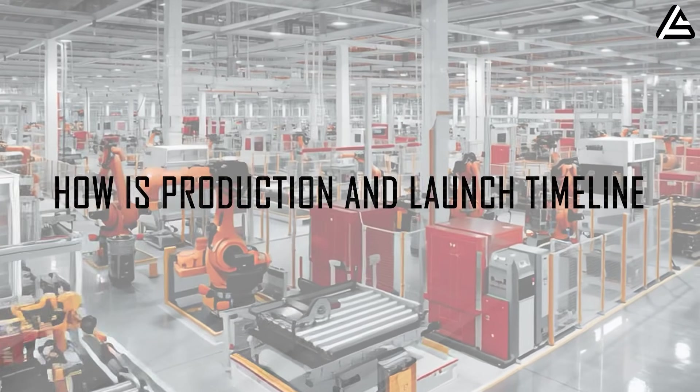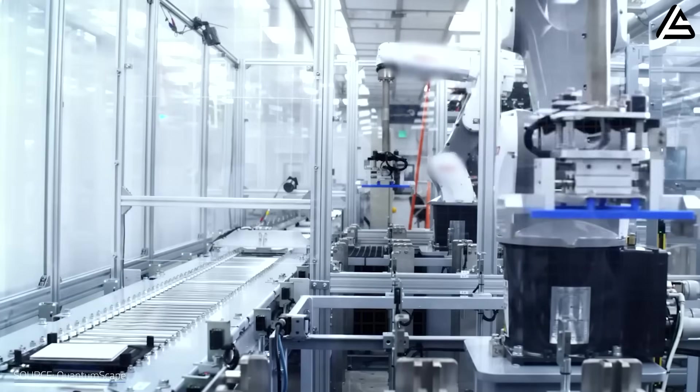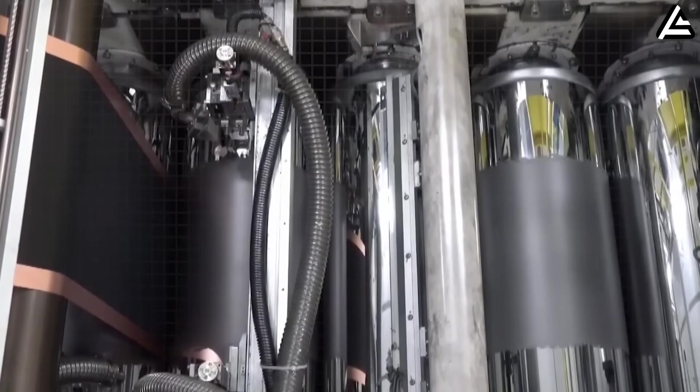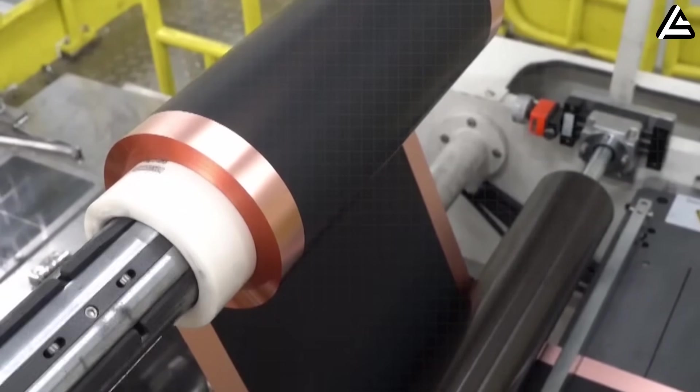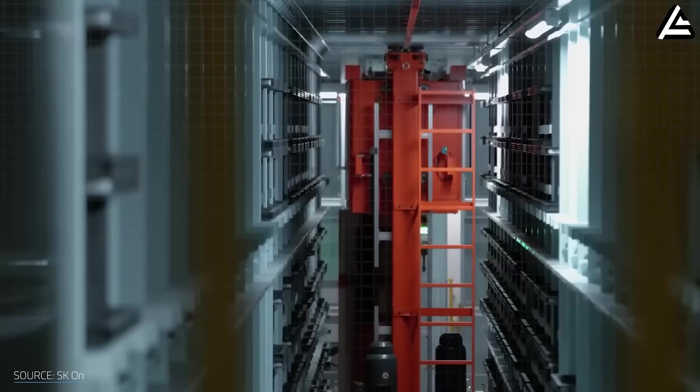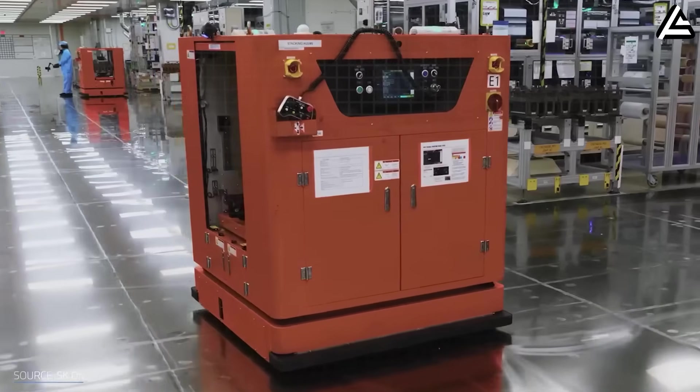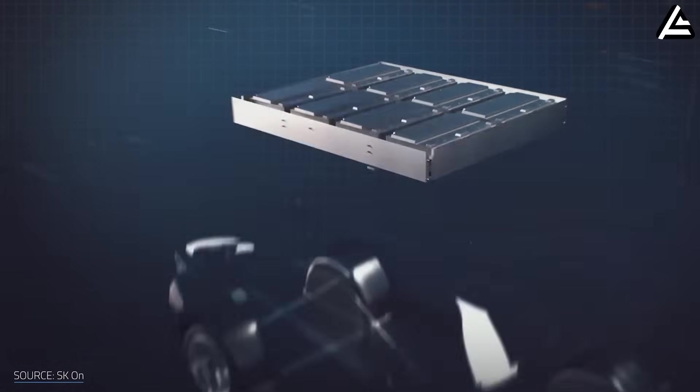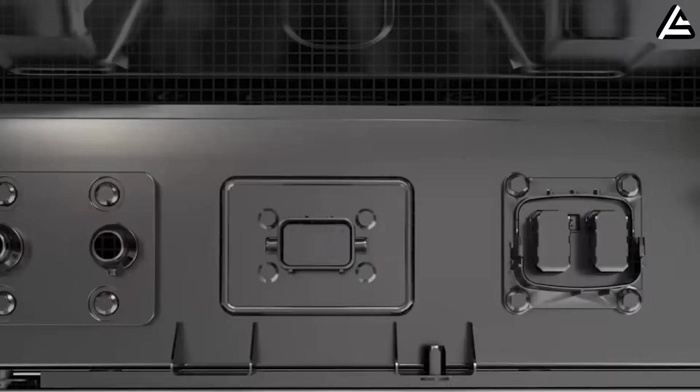How is production and launch timeline for solid-state cells? Tesla's solid-state battery program is moving from the lab toward industrial-scale deployment in a highly methodical way, prioritizing both reliability and manufacturability. According to internal sources, the company plans to begin small-batch pilot production in 2026, leveraging modified 4680 lines at its existing gigafactories. These pilot runs will produce limited quantities of 60 to 75 amp-hour cells to validate assembly, integration into modules, and real-world thermal performance. Each batch will undergo rigorous vehicle-level testing in prototype Model 2 units, ensuring that the cells meet Tesla's demanding safety and performance standards before ramping up.